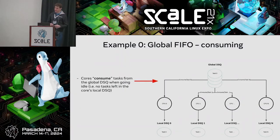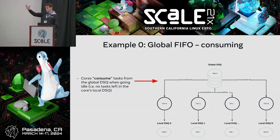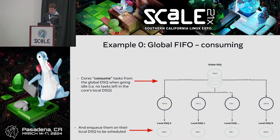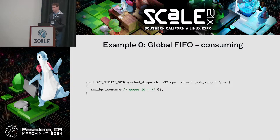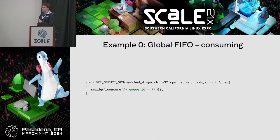Once a task is on that global dispatch queue, how do I actually get CPUs to execute it when they're about to go idle? The 'consume' function takes a task from a dispatch queue and puts it on the local dispatch queue to actually execute it. In the dispatch callback, which is called when you're about to go idle, you call scx_bpf_consume with the same queue ID — that puts it on the local queue and allows it to be executed. You may need to handle the case where a core goes to sleep and has nothing to consume, but this code is pretty much all you need for a global dispatch queue.